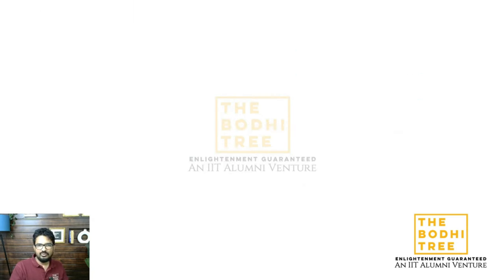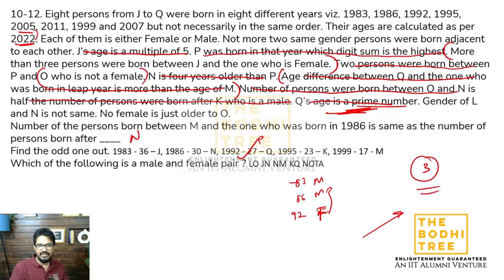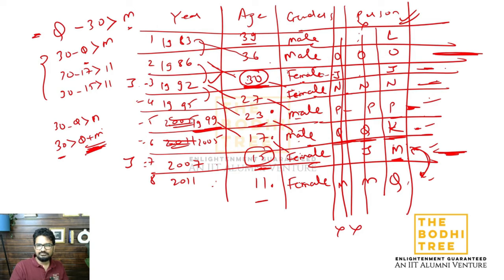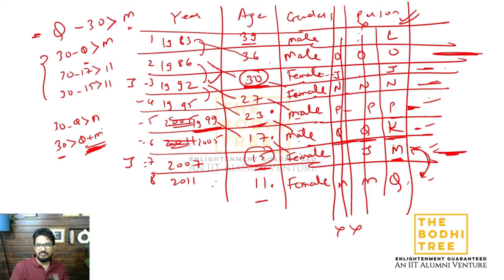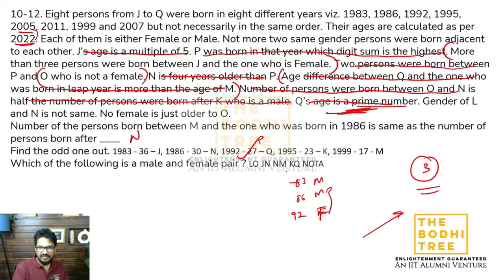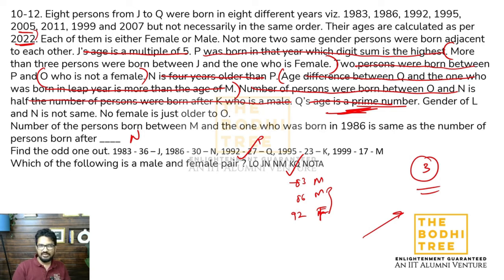Which of the following is male and female pair? LO - dono male hain. JN - dono female hain. KQ - K and Q male female pair hain. Yeh correct answer hai. All the questions were of highest quality - isliye apni pariksha tum hamesha deni chahiye.